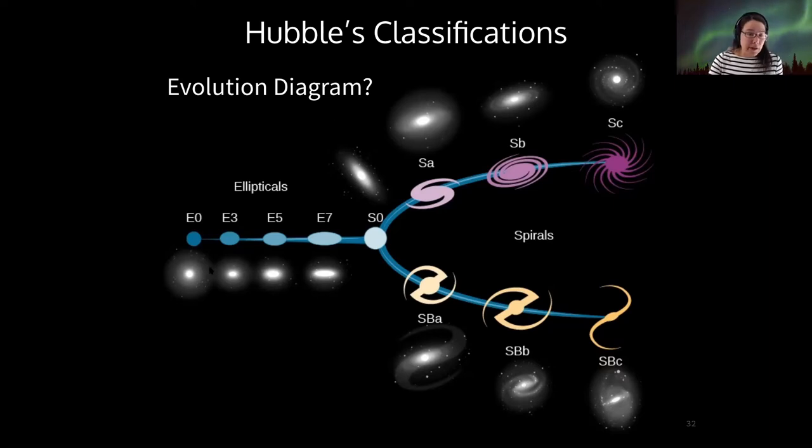Hubble himself thought maybe it's possible that elliptical galaxies turn into spirals over time, or maybe the opposite occurs, that spirals turn into ellipticals. But nothing like this in this particular tuning fork configuration was really supported by the evidence at the time.